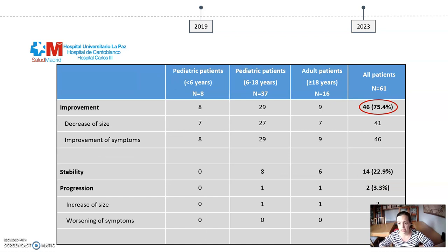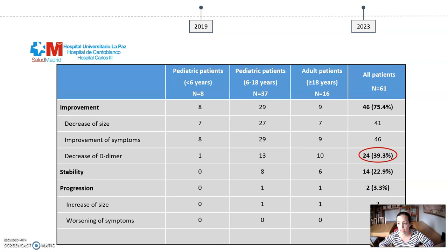Regarding the response, 75% of patients presented improvement — all of them in symptoms, and most also in size. Almost 23% remained stable in terms of symptoms. Only 2 patients presented progression, both with increase in size of the affected limb due to lymphedema, but with improvement in the rest of symptoms. We also evaluated the D-dimer, which indicates the grade of coagulopathy and intralesional thrombosis and was elevated in almost 45% of our patients. After alpelisib, the D-dimer was reduced in 82% of them.